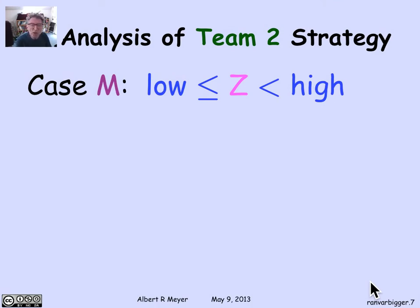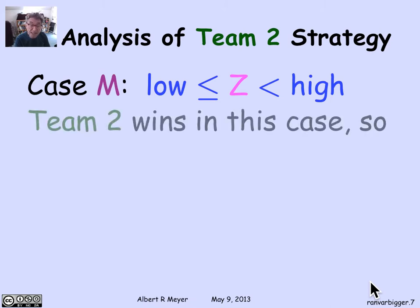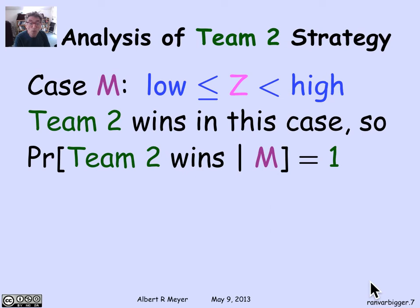The middle case is when your randomly chosen z falls strictly between low and high — that is, z is greater than or equal to low and strictly less than high. In this case, z is guiding you correctly. If you turn over the low card, it looks low (it's ≤ z), so you switch to the high card and win. If you turn over the high card, it's greater than z, so it looks high and you stick with it. In this case you're guaranteed to win — the probability of winning given the middle case is 1.